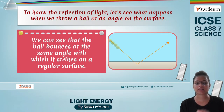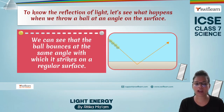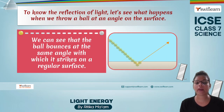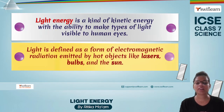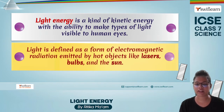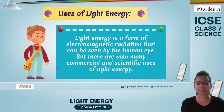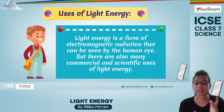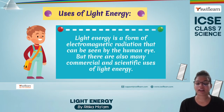To understand reflection of light, take the simple example of a ball hit on a surface. If we throw a ball on the surface, the ball will bounce back at the same angle at which it strikes the surface — the same happens with a light ray when it strikes any object. Light energy is a type of kinetic energy with the ability to make visible light visible to human eyes. It is a kind of electromagnetic radiation emitted by objects like lasers, bulbs, the sun, etc.